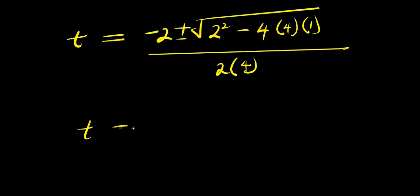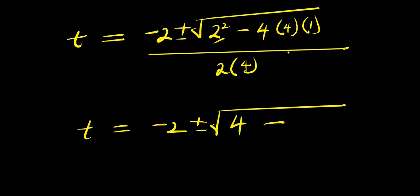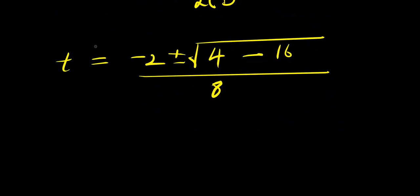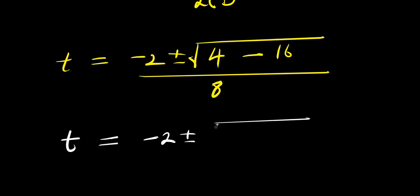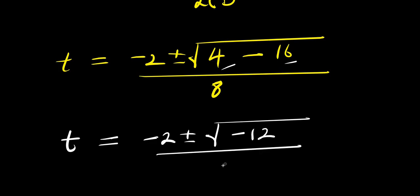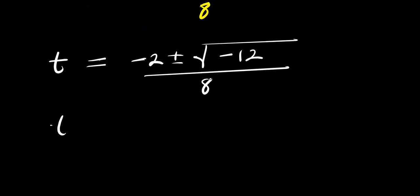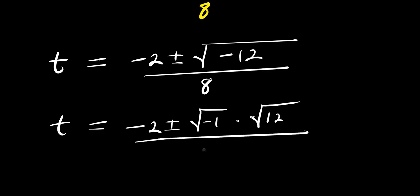From here, we have t equals negative 2 plus or minus square root of 4 minus 16, which is negative 12, divided by 8. So we have t equals negative 2 plus or minus square root of negative 1 times square root of 12, divided by 8.